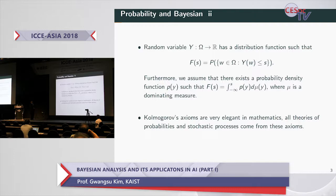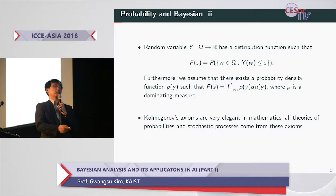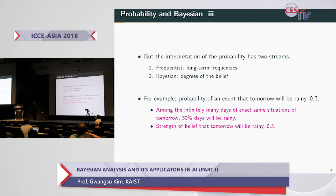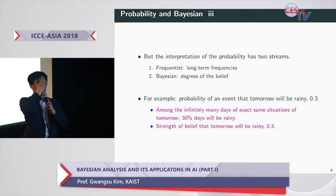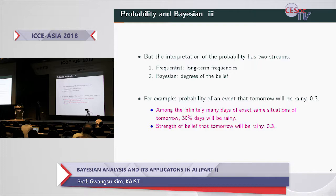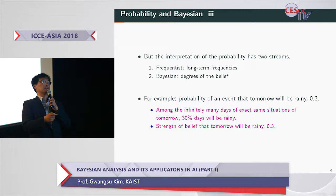The Kolmogorov axioms are very elegant in mathematics, and all probability and stochastic process theory comes from these axioms. But the interpretation of probability has two streams. The first is the frequentist interpretation, and the second is the Bayesian interpretation. The frequentist interprets the probability as the long-term frequency among very many repetitions.